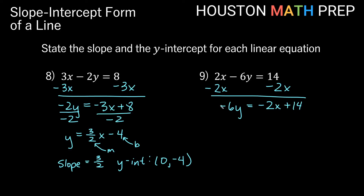We need to divide by negative 6, and don't forget to divide every term by negative 6. So we get y equals: negative divided by a negative is positive, and 2 over 6 reduces to 1 over 3, giving us 1 third x.